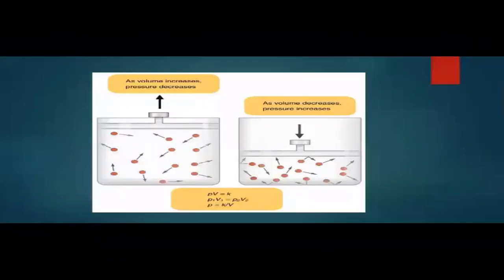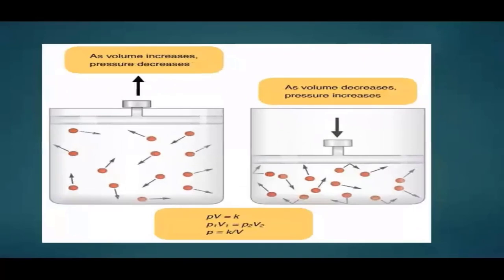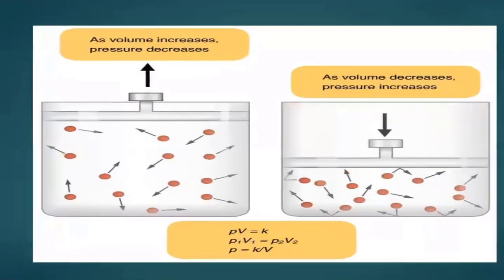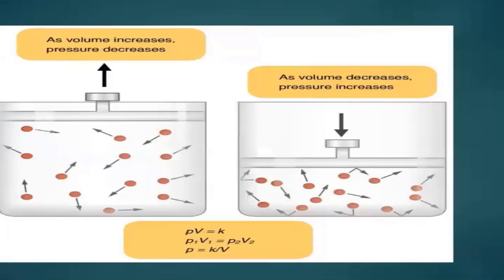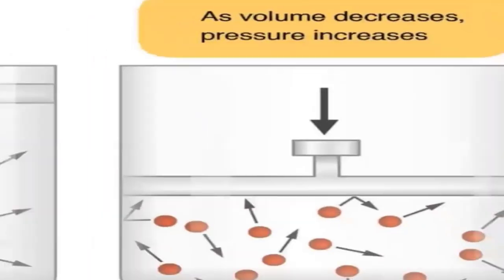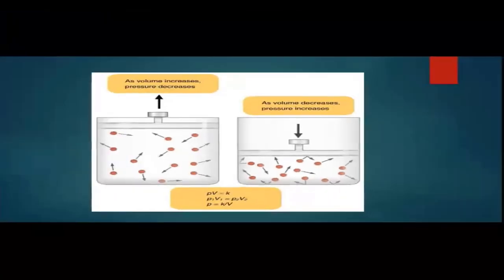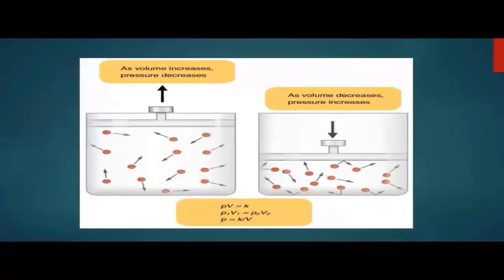As we see in these containers, here we have two containers. The first one shows volume increase and pressure decrease. In the second container, as the volume decreases, pressure increases. As we push the piston, we have volume decrease and pressure increase. In both cases, temperature remains constant.